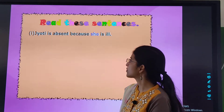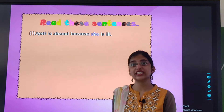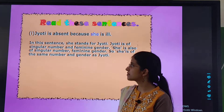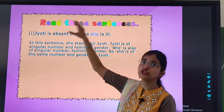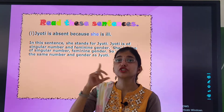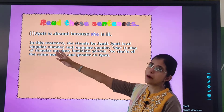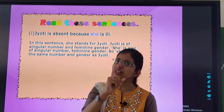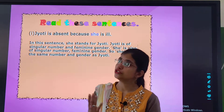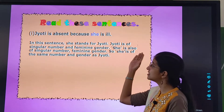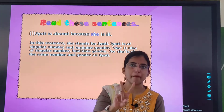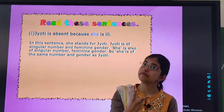Read these sentences. Jyoti is absent because she is ill. In this sentence, 'she' stands for Jyoti. We used 'she' in place of Jyoti. Jyoti is of singular number — it is the name of a single person — and feminine gender. 'She' is also singular number and feminine gender. So the pronoun matches Jyoti in both number and gender.